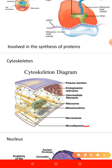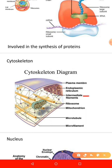Microfilaments are long and fine thread-like structures present throughout the cytoplasm, and mainly in muscle cells. They give structural strength to the cell, provide resistance against pulling forces, and are also responsible for movements like contraction, cytokinesis, and gliding.